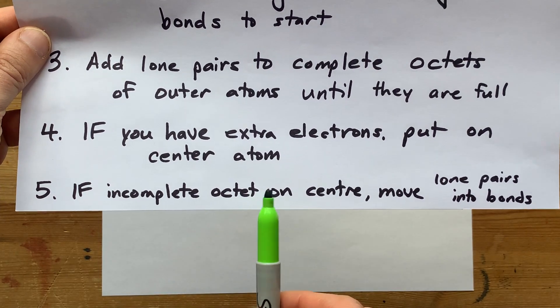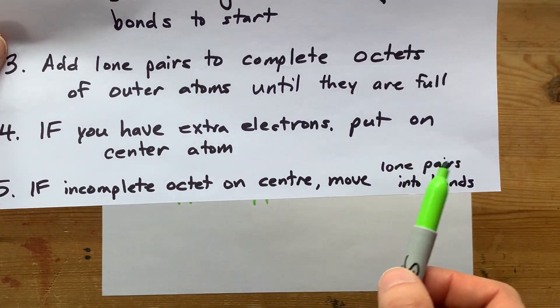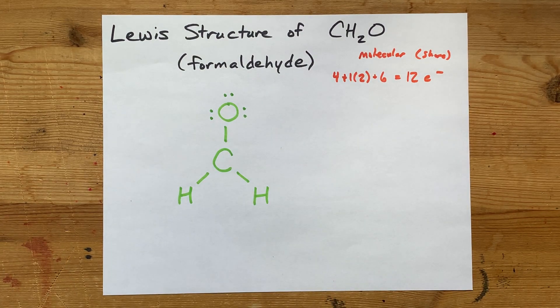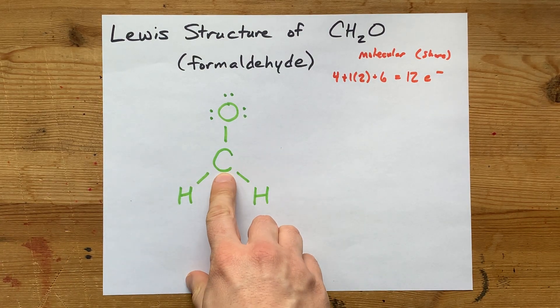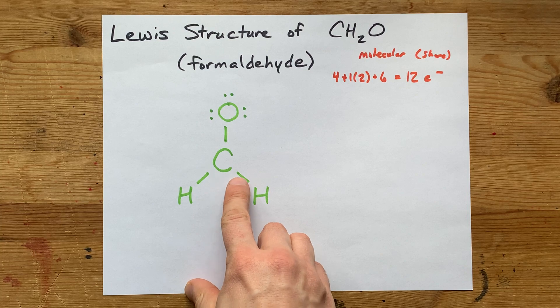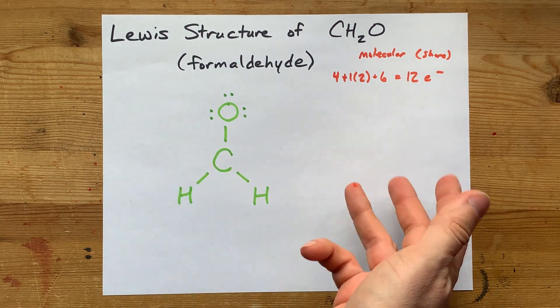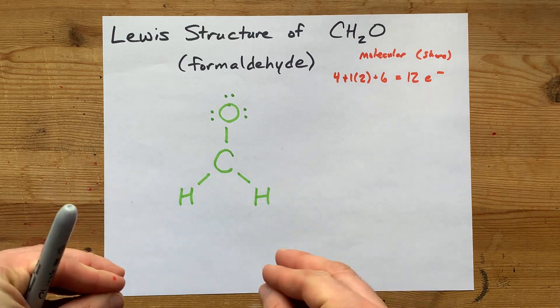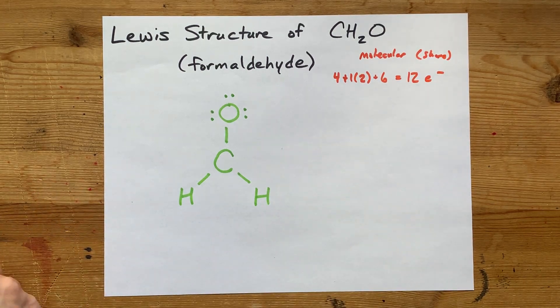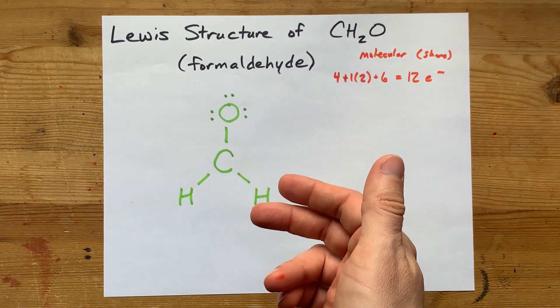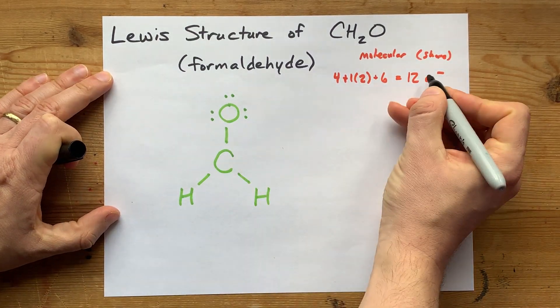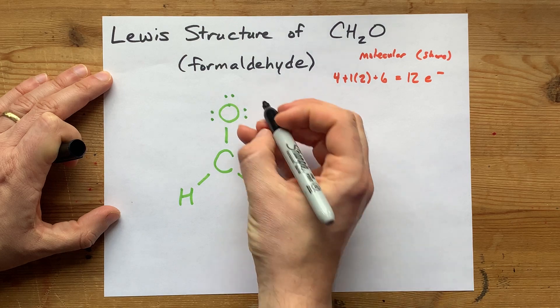And then if there's an incomplete octet on the central atom, we'll move lone pairs to form double and triple bonds. Well, that central atom only has two, four, six electrons around it, and it wants to satisfy the octet rule, which means it wants eight electrons total. Where are we going to get the seventh and eighth electron from? Our only option, because there are no extra electrons to deal with here, is to move them from one of the outer atoms into the bond.